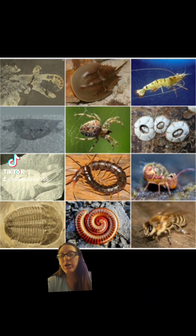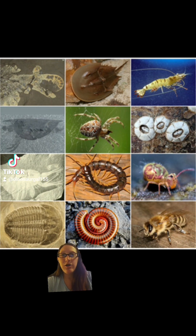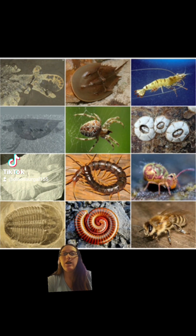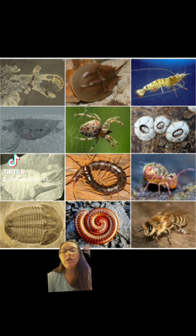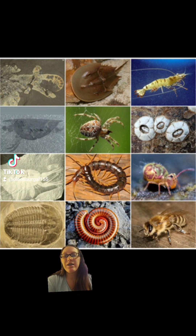Trilobites are a type of seafaring arthropod. Arthropods are a phylum that include crustaceans like crabs, crayfish, lobsters, arachnids like spiders and scorpions, millipedes, centipedes, and of course the plethora of insects that we have.